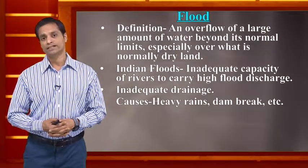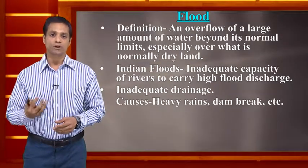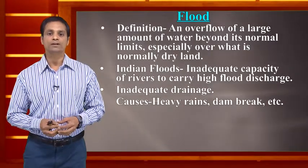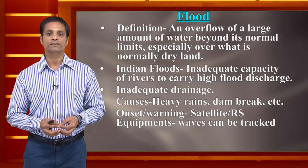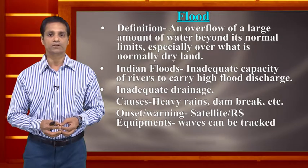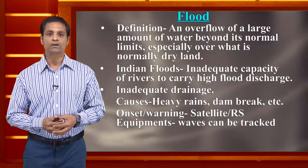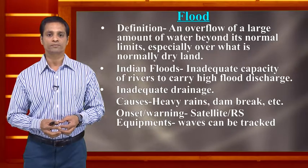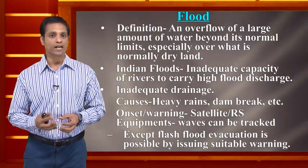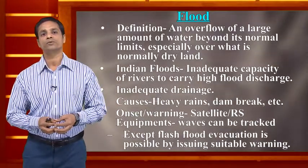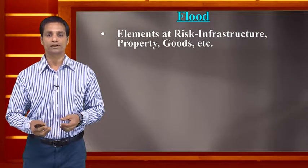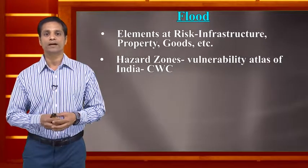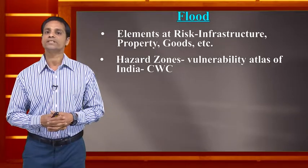Primary causes of floods include excess rainfall and dam breaks. Satellite-based technology and remote sensing equipment can track water movement, and the meteorological department can issue flood warnings. Except for flash flooding, evacuation is generally possible. Flash flooding can cause dam breaks, creating widespread problems. Elements at risk include property, infrastructure, and goods. Flood vulnerability maps are issued by the Central Water Commission.